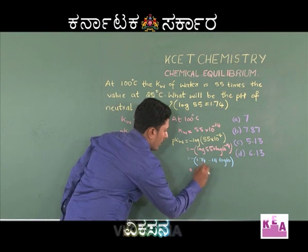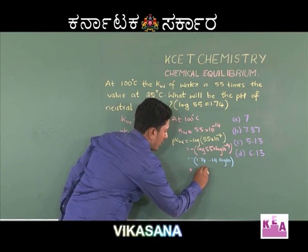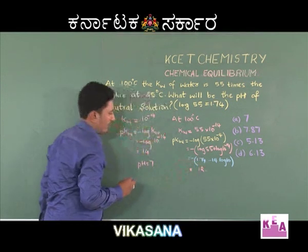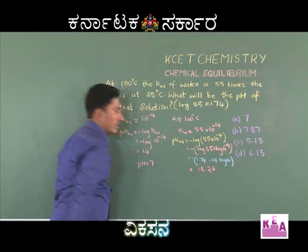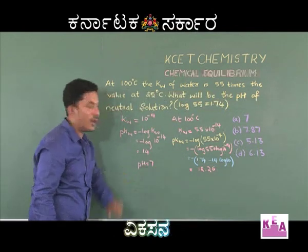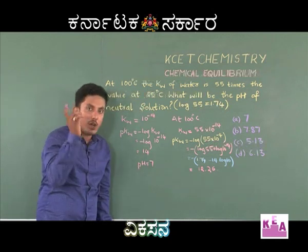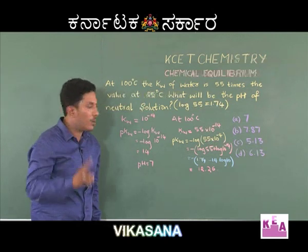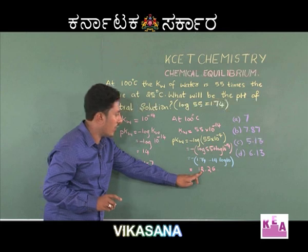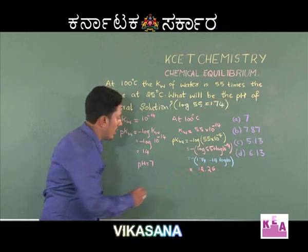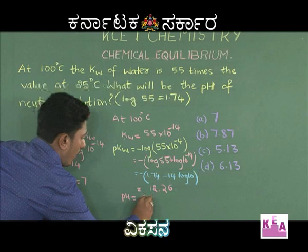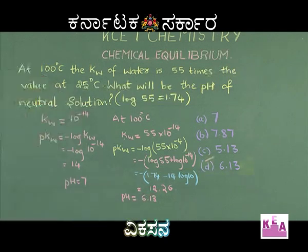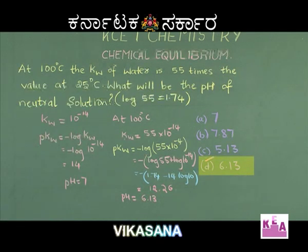For a neutral solution, pH = ½ × pKw = ½ × 12.26 = 6.13. Hence option D is the right answer.